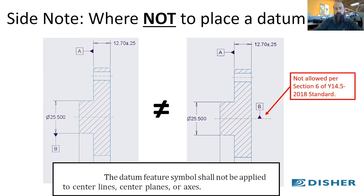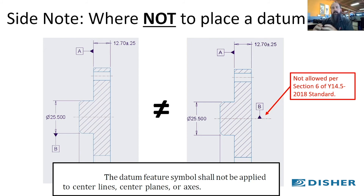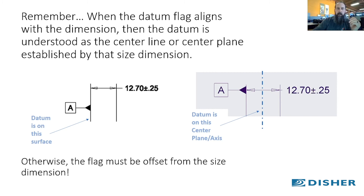As a side note, there's a placement the standard explicitly calls out where you definitely do not want to place your datum. I've actually been guilty of this — when a drawing is cluttered, I've placed the datum flag on the axis of the round boss on the cap. But the standard is very explicit: the datum feature symbol shall not be applied to centerlines, center planes, or axes. It needs to be something actually measurable by the metrology department — it can't be derived or calculated, it has to be based right off the actual diameter of that boss.